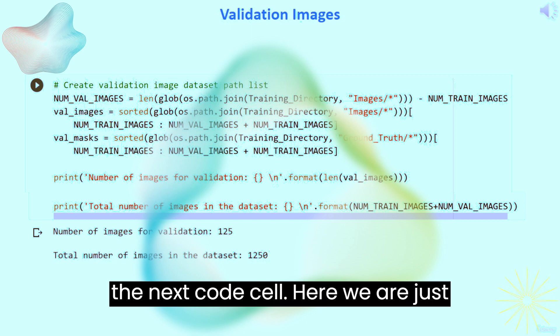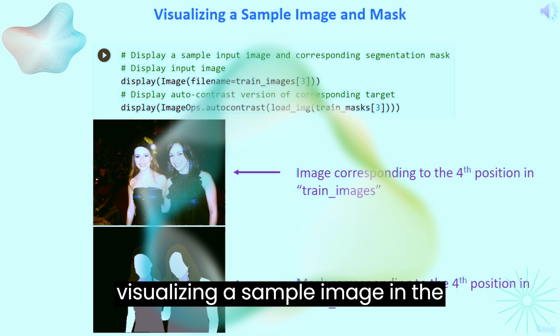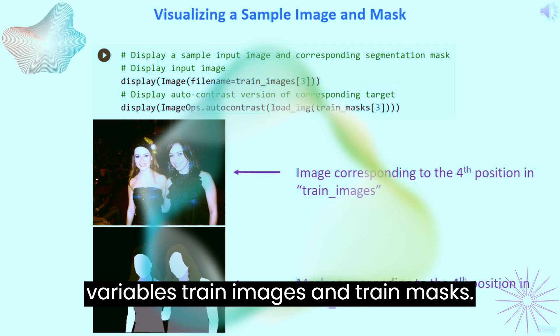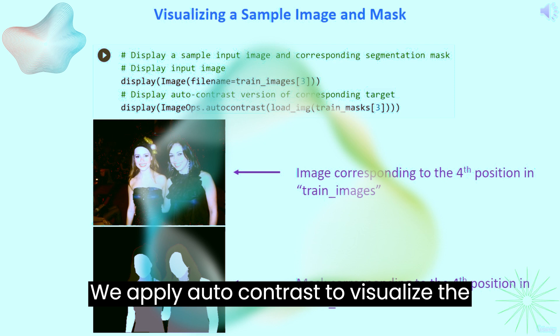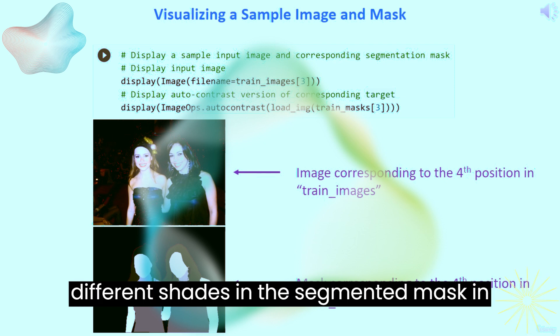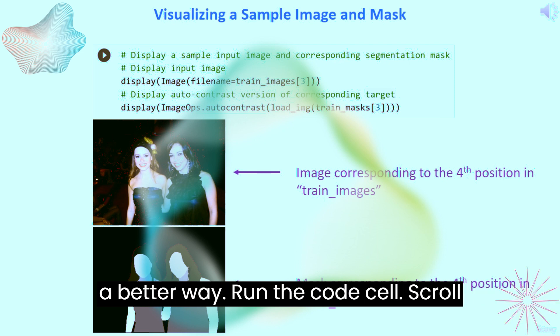Scroll down to the next code cell. Here we are visualizing a sample image in the variables train_images and train_masks. We apply auto-contrast to visualize the different shades in the segmented mask in a better way. Run the code cell.